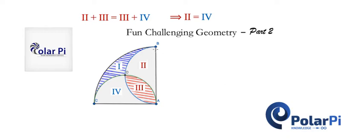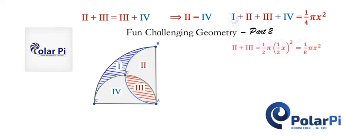Furthermore, if we say that the radius of the quarter circle is x, then we can say the following: the area of the four regions added together will have to be the area of the quarter circle with radius x, which is one quarter pi x squared. Next, we'll add regions two and three and say that the area of regions two and three will have to be one eighth pi x squared.